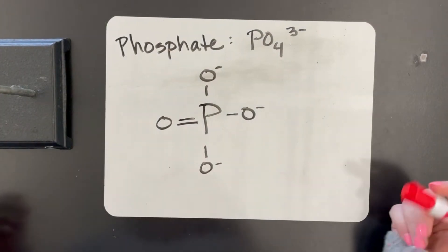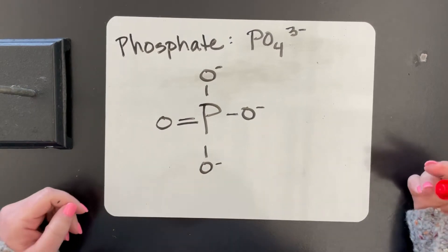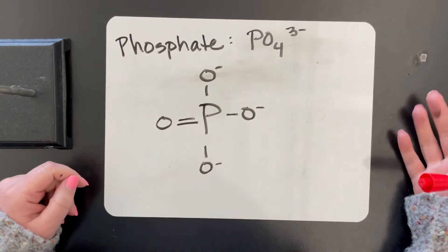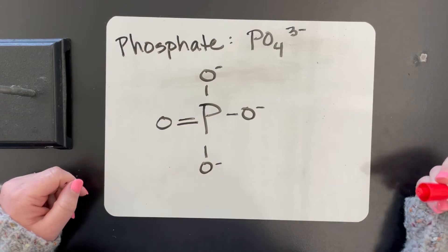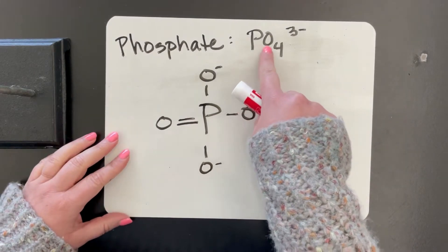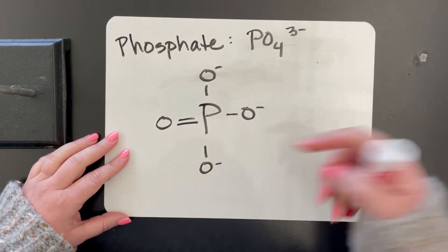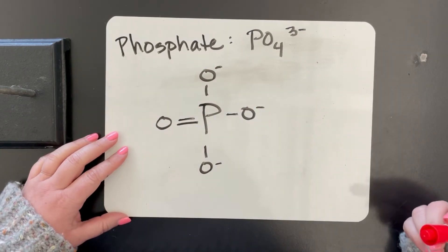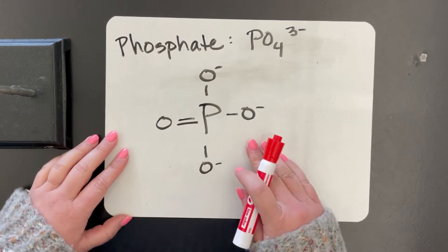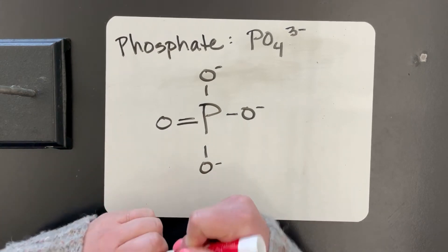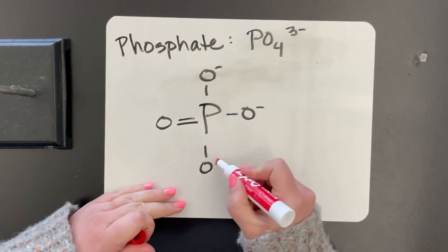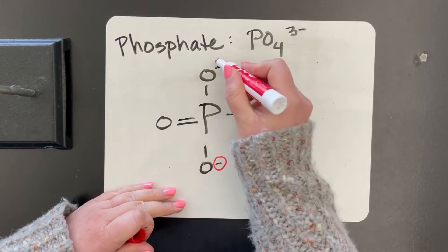So phosphate is a common functional group, meaning it's just a common molecule we see in chemistry, and it's PO4 3- so it's a phosphorus with four oxygens. If we were to draw the structure it would look like this.